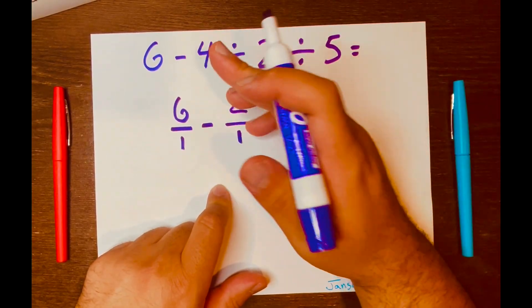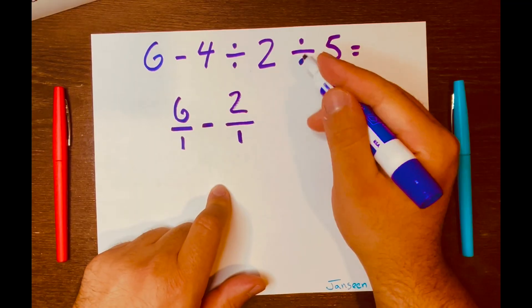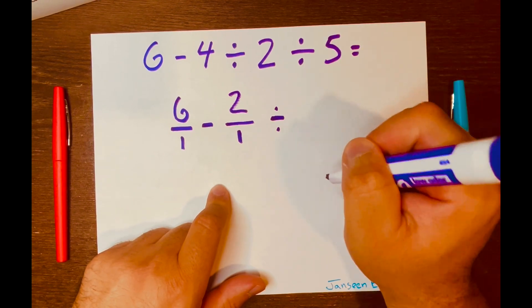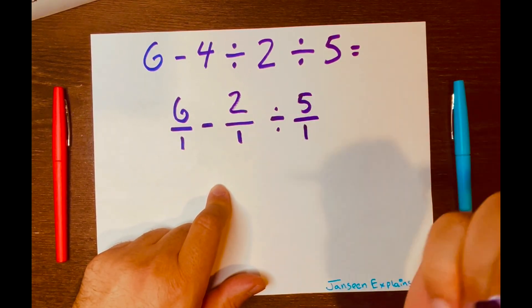And now we have to bring down the division symbol and the 5, and turn that 5 into a fraction as well. And now we have this next.